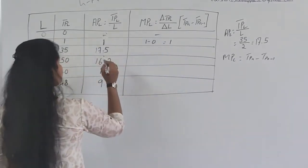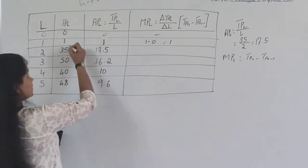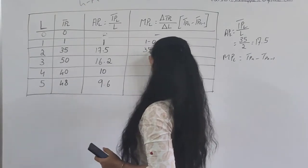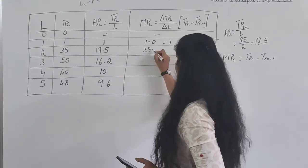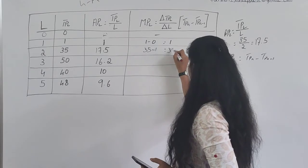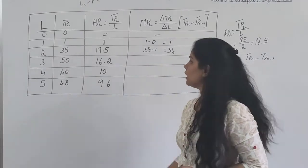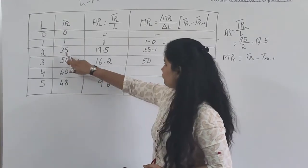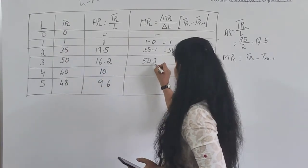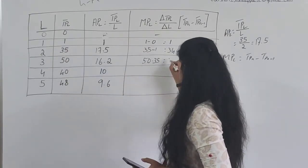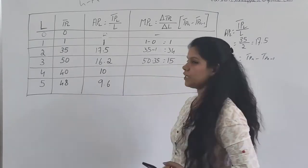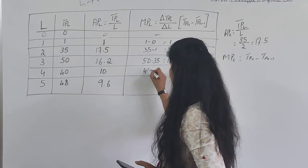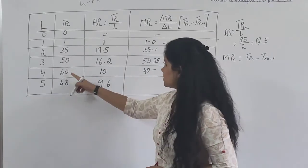I have to consider TPL for it. So 35, 35 minus 1 which is 34. You have 50, consider it. Before that you have 35, so it is nothing but 15. So you have 40 minus 50, the answer is minus 10.